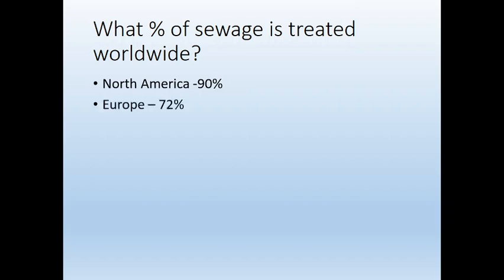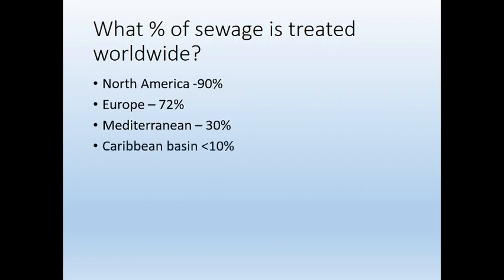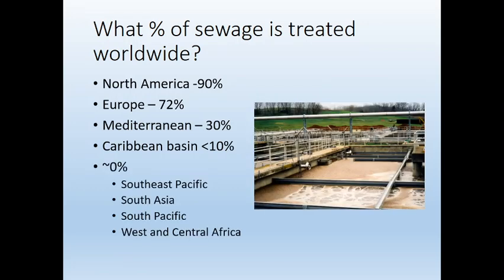Europe is a little less thorough at 72%. Of the watersheds in the Mediterranean, it's only 30%. Basically the entirety of Northern Africa — when you flush a toilet, it pretty much just goes straight to a river. The Caribbean has very little treated water, and that's going directly into the ocean. The Southeast Pacific, South Asia, South Pacific, and most of Africa have essentially zero percent sewage treatment.